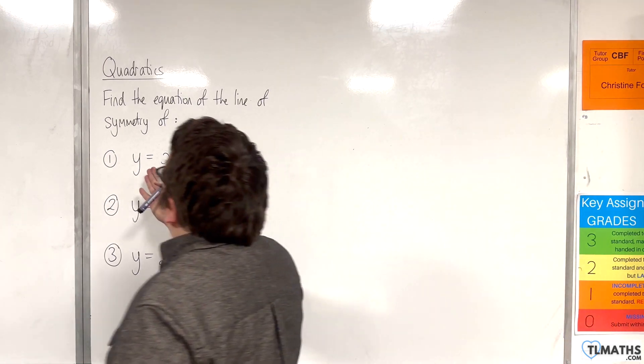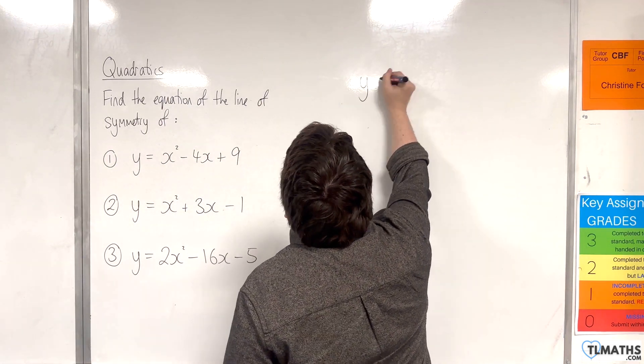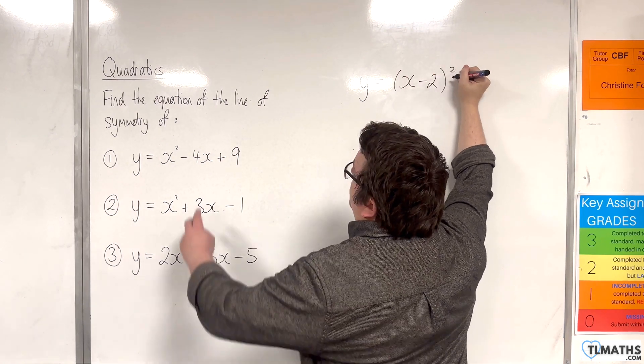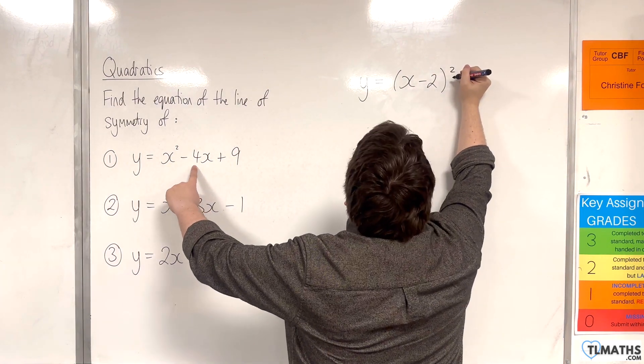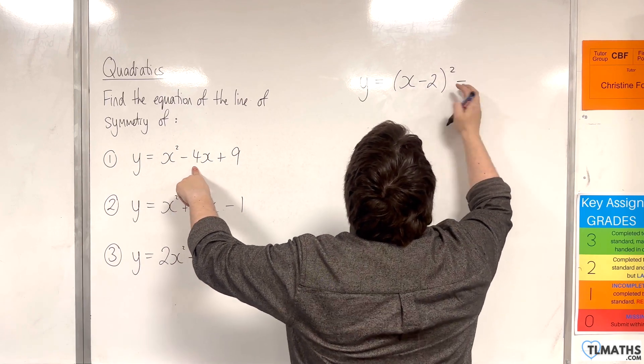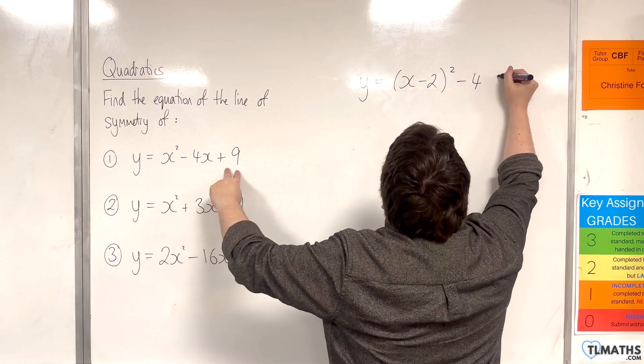For the first one, y equals x squared take away 4x plus 9, we can write that as y equals x take away 2 squared. So half the coefficient of the x goes inside the bracket, and we're going to square that, and then we always take away the square of this number, so take away 4, and then we've got the plus 9 on the outside.